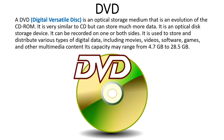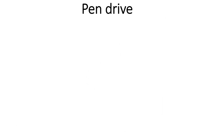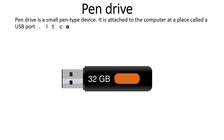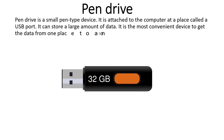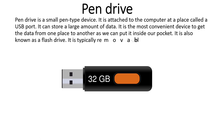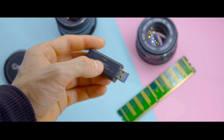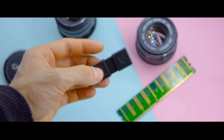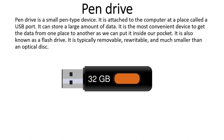Another type of secondary storage device is the pen drive. It is a small, pen-type device that can be attached to a computer system via a USB port. Also called a flash drive, it is the most convenient storage device for transferring data from one computer to another. It is small enough to be carried in a pocket, making it a very portable secondary storage device also used for backup of important files and folders.